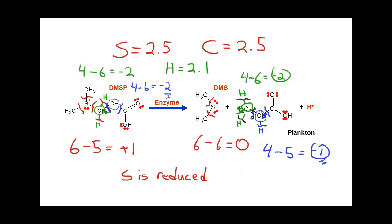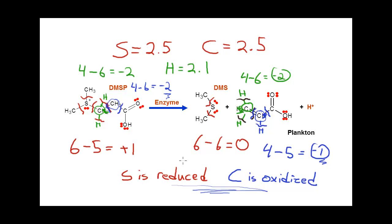Therefore, carbon in this case is formally oxidized and sulfur is reduced. The bond cutting method allows us, knowing the structure, to pinpoint the site of oxidation and reduction in a chemical reaction.